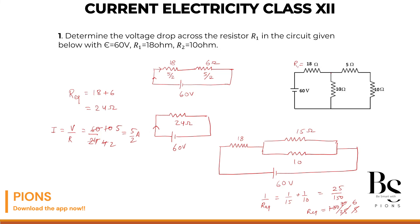Current across 18 ohm is 5 by 2. Let's find the voltage across 18 ohm. Voltage across 18 ohm equals current times resistance 18. So 2 nines are 18, 45 volts.